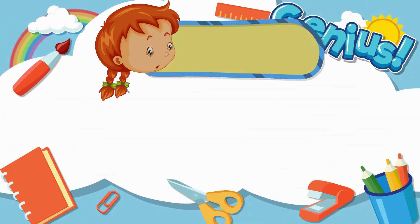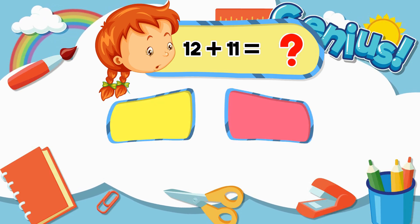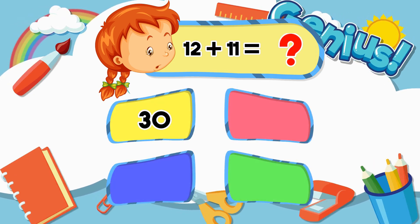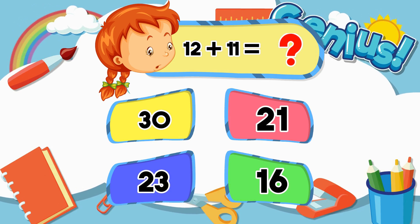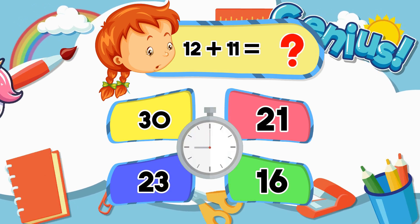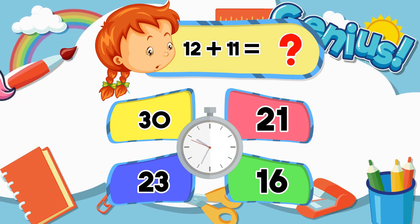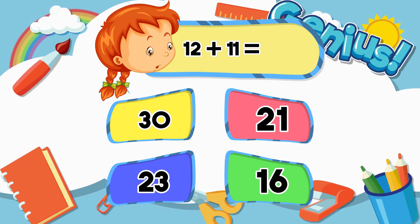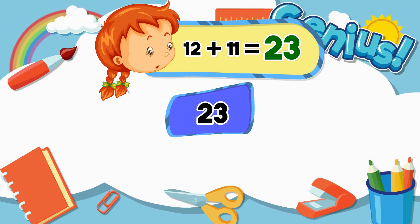What is 12 plus 11? 30, 21, 23, 16. Answer: 23.